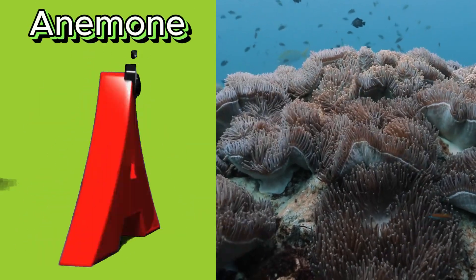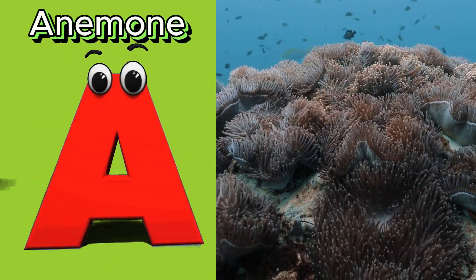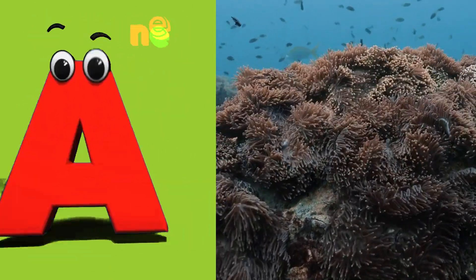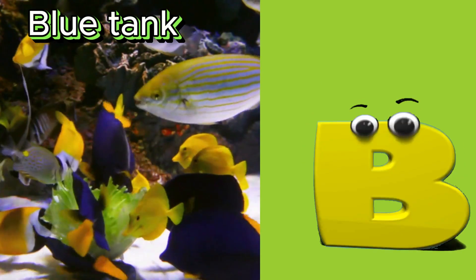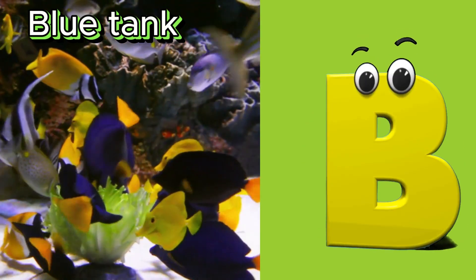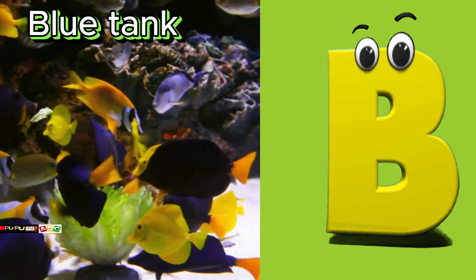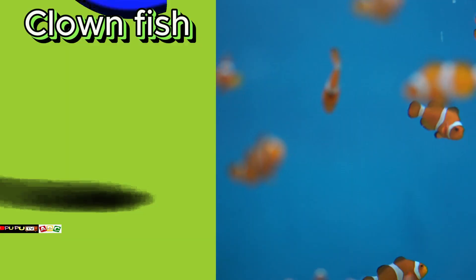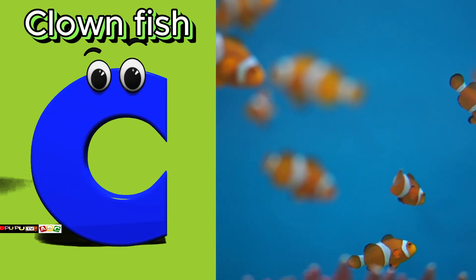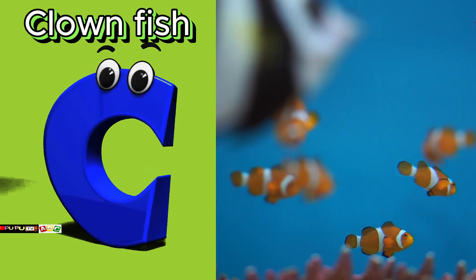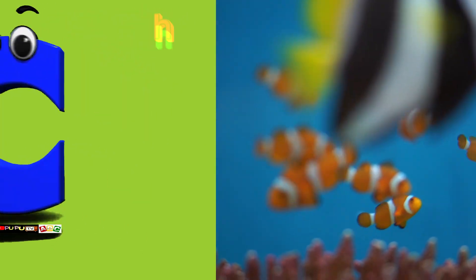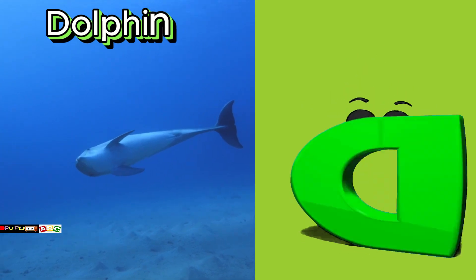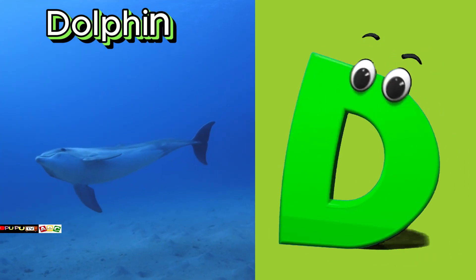A is for anemone. Ah, ah, anemone. B is for blue tang. Buh, buh, blue tang. C is for clownfish. Cuh, cuh, clownfish. D is for dolphin. Duh, duh, dolphin.